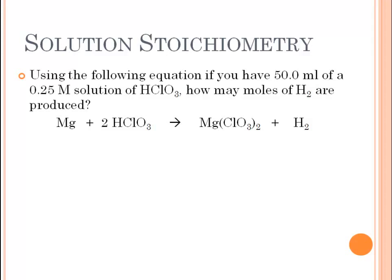Using the following equation, if you have 50 milliliters of a 0.25 molar solution of chloric acid, how many moles of H₂ gas are produced? The first thing you should do when reading these problems is write down what's given and what you're asked to find. We are given the volume in milliliters and the concentration, 0.25 molar, and we're asked to find the number of moles of hydrogen gas produced.